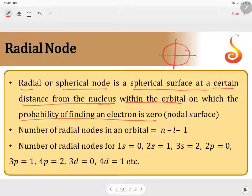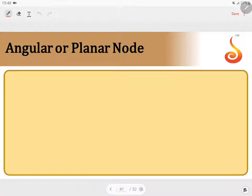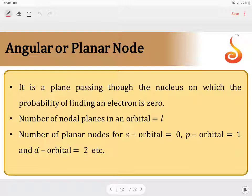How do you calculate the number of radial nodes? The number of radial nodes can be calculated as n minus l minus 1, where n is the principal quantum number and l is the azimuthal quantum number. You can calculate the radial node for each and every orbital using this formula.